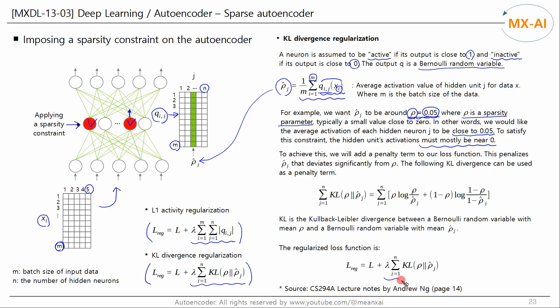To achieve this, we add a penalty term to the loss function. This penalizes rho hat j that deviates significantly from rho. The following KL divergence can be used as a penalty term. This KL is the Kullback-Leibler divergence between a Bernoulli random variable with mean rho and a Bernoulli random variable with mean rho hat j. Minimizing this makes the distribution of rho and the distribution of rho hat j similar. That is, rho hat j gets closer to rho.